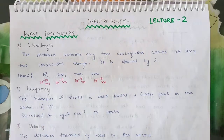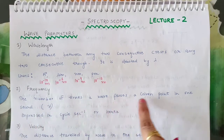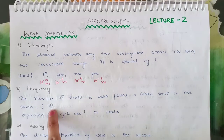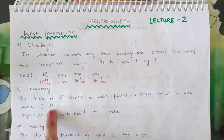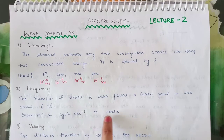Next is frequency. The number of times a wave passes a given point in one second. It is denoted as mu. It is expressed in cycles per second and its unit is hertz.